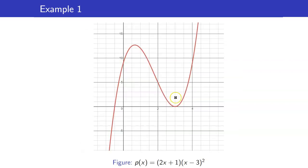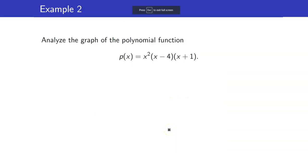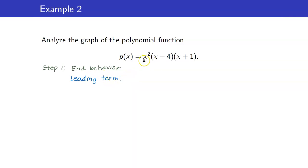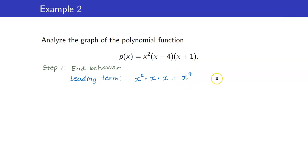Here is the sketch of the graph using a computer. Next, let us graph this polynomial function. For our end behavior, we need to determine our leading term. For the factors, we have x squared, and the leading terms of the other factors are x and x, so therefore that's x to the 4. This is even degree with positive leading coefficient, so therefore it's up, up.